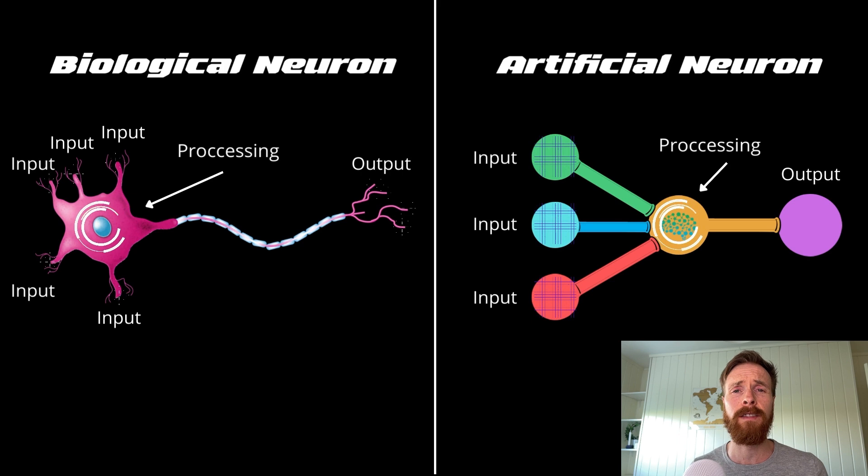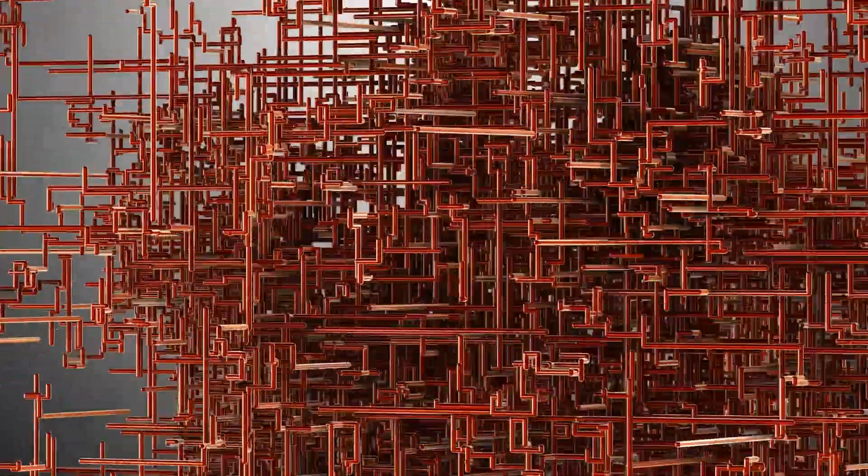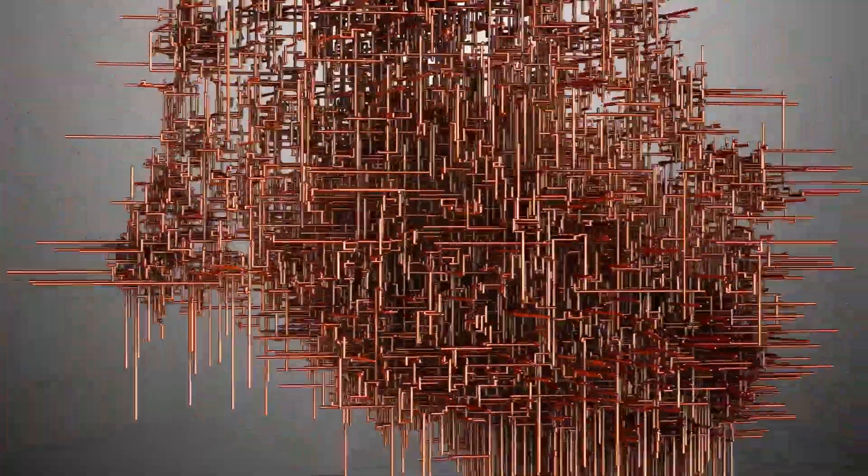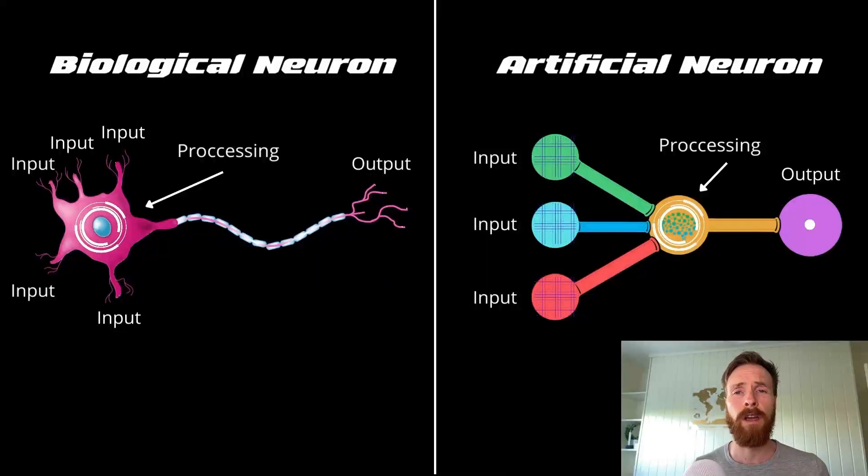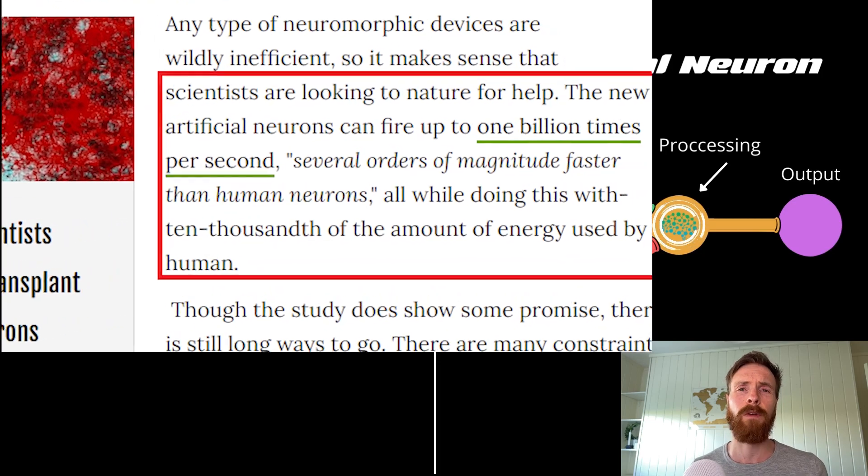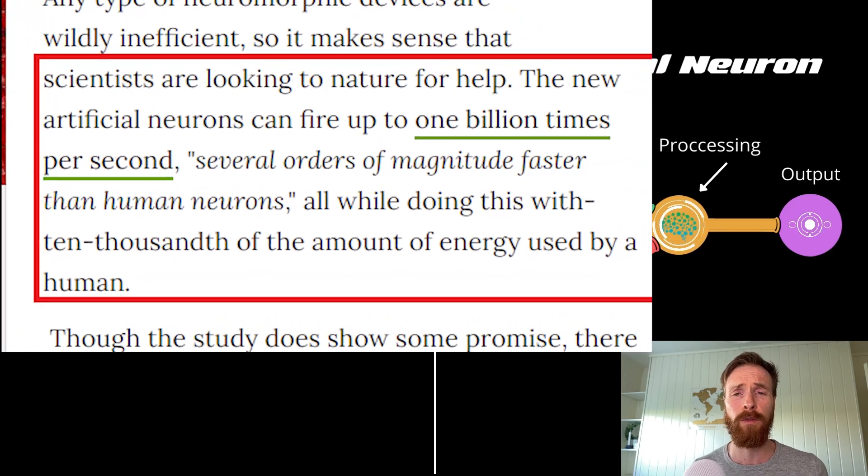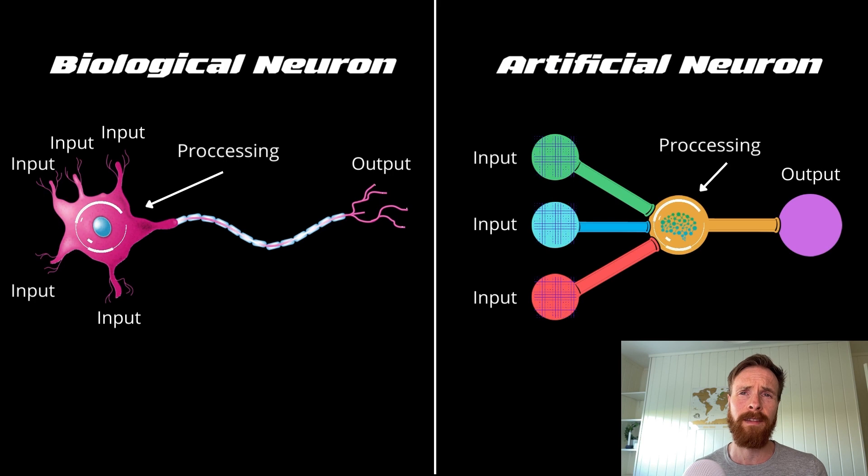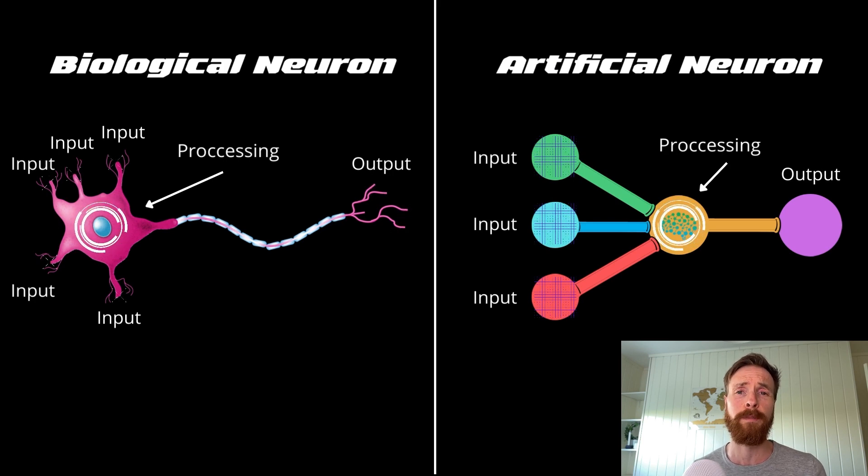Early AI scientists decided to mimic human neurons by making their own simple artificial neurons in software. Since artificial synapses can fire a billion times per second, several orders of magnitude faster than a human neuron, they suspected that they were onto something special.